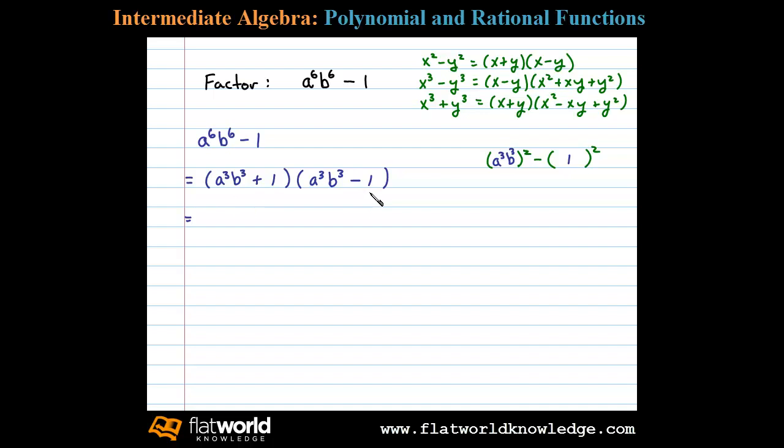So we could factor further. We need to next determine what's being cubed. So for the first term, well for both the terms actually, what cubed will be a cubed b cubed? And after some thought we decide a b cubed is a cubed b cubed. And then what cubed is one? One cubed is one.